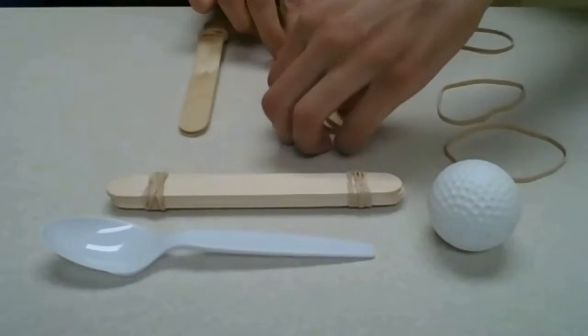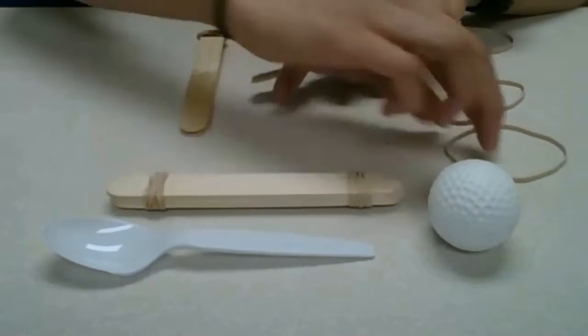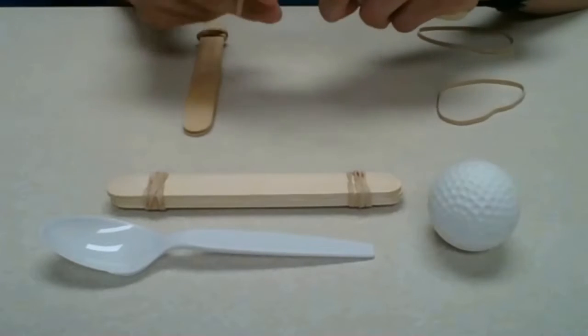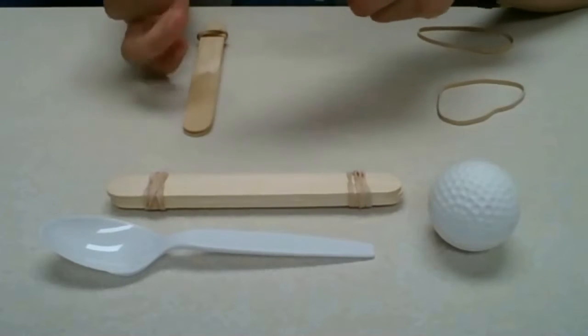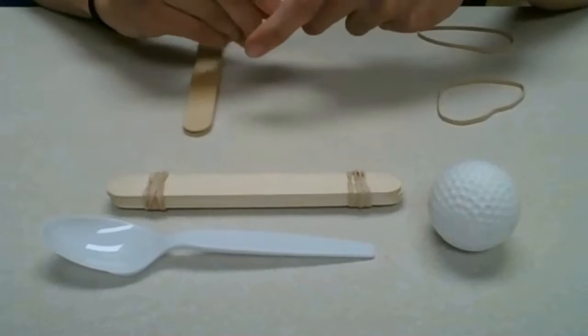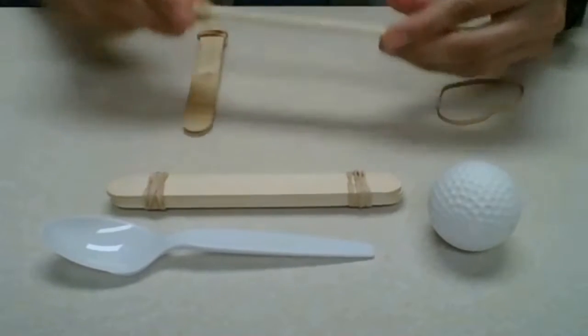And we're going to do it one more time for the last two popsicle sticks. We're going to use a rubber band same way that we just did. So we'll loop it a few times and looks good to me.